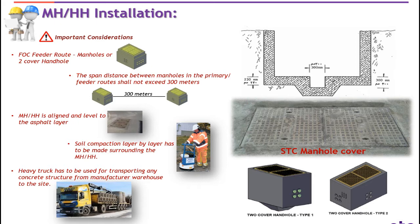General requirements — there are a number of checkpoints. Number one: in all feeder routes, fiber optic cables use manhole with two-cover handholes. Use manhole or two-cover handholes in all civil networks. Number two: the span distance between manholes in primary or feeder roads shall not exceed 300 m. This is the responsibility of the OSP designer.